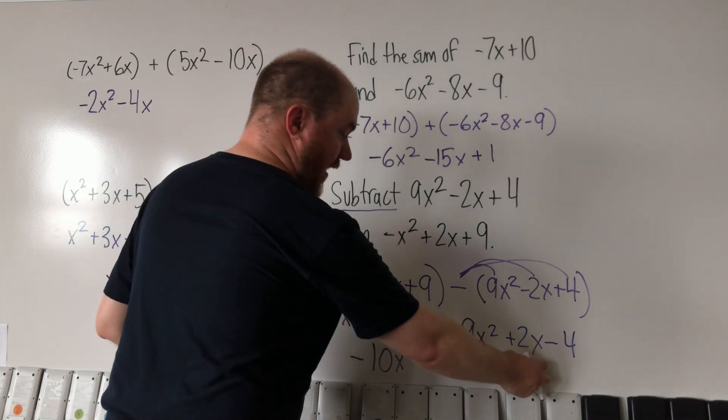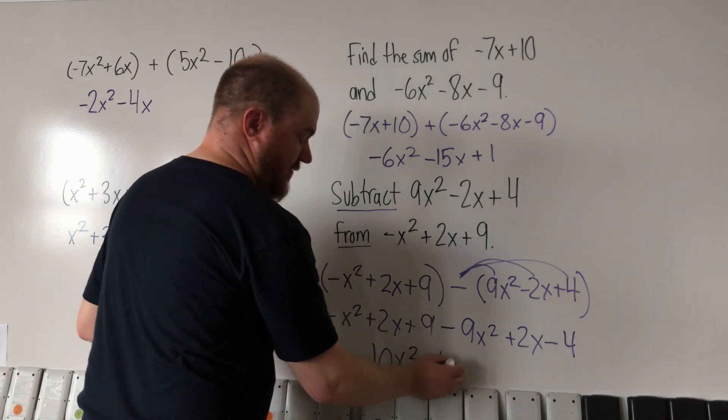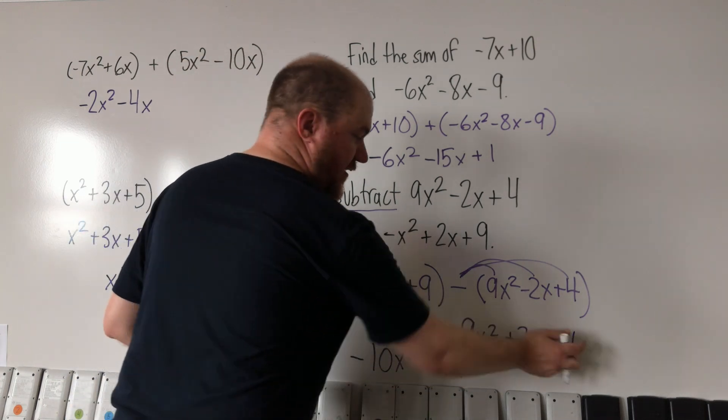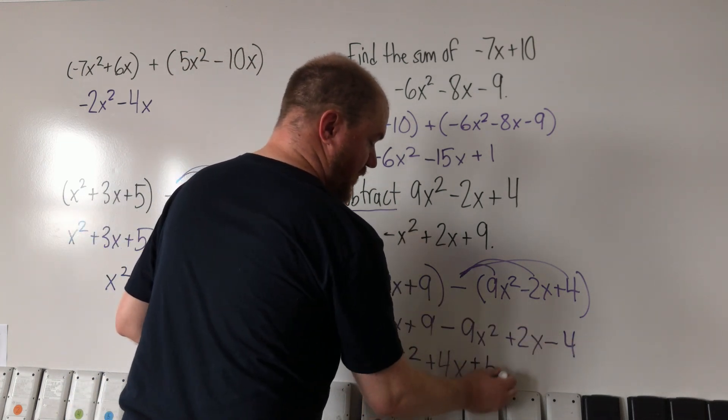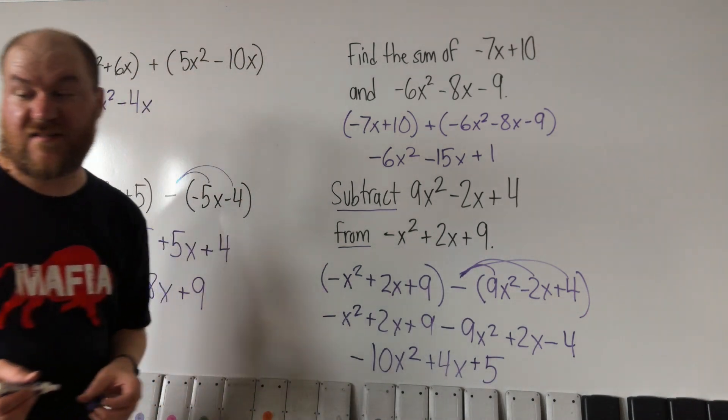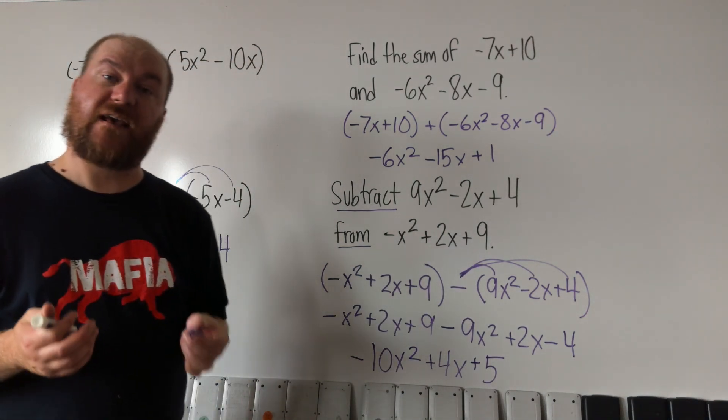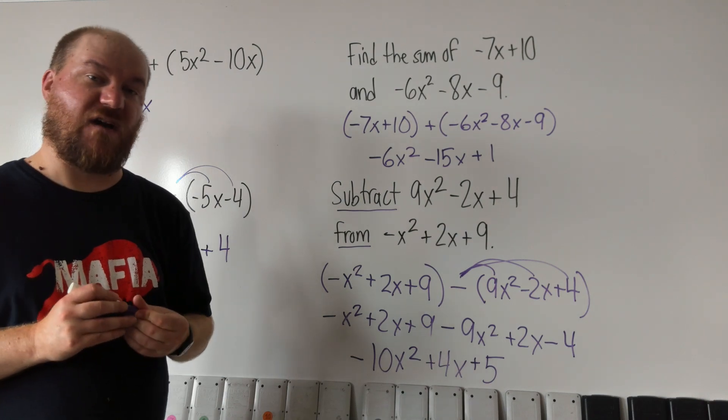We have 2x and 2x, that's 4x. And we have positive 9 and negative 4, that's positive 5. So the answer to this one is negative 10x squared plus 4x plus 5.